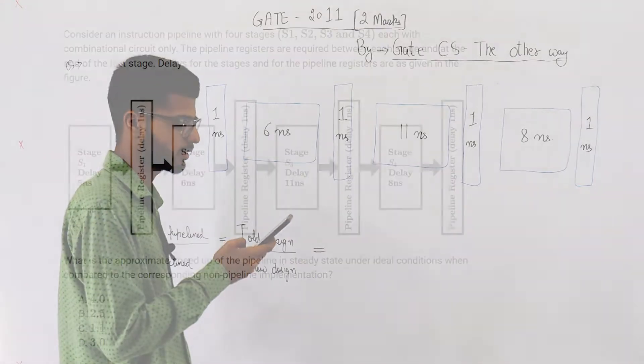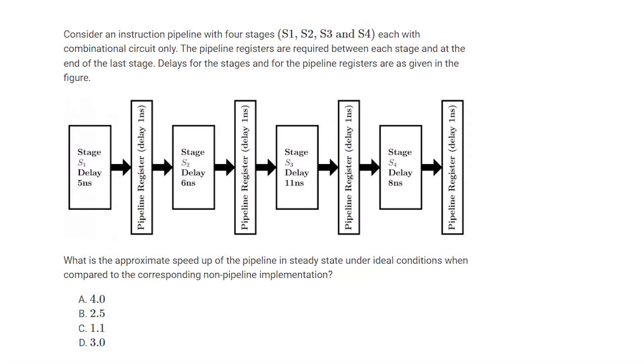The statement is: consider an instruction pipeline with four stages S1, S2, S3 and S4, each with combinational circuit only. The pipeline registers are required between each stage and at the end of last stage. Delays for the stages and for the pipeline registers are as given in the figure. Just analyze this figure.